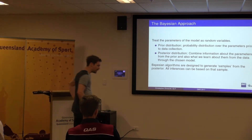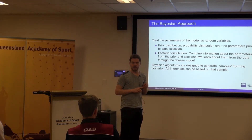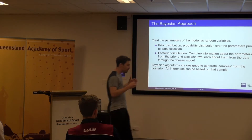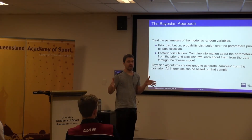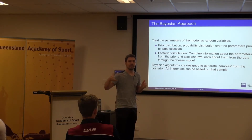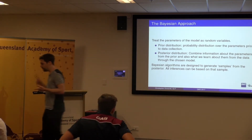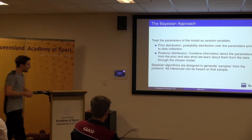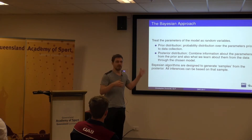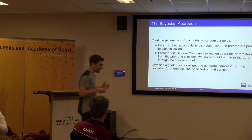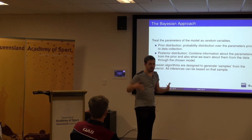In the Bayesian approach we treat our parameters as random variables, and we have two different objects. We've got the prior distribution, which is a probability distribution over your parameter space. The idea of the prior is to incorporate any information you have about those parameters before you collect the data. If you've done similar studies you can incorporate that information into the prior, and if you've got expert opinion we can also incorporate that. Then we combine that prior information with what we learn about the parameters through the data — that comes through the specification of the statistical model. Combining these two pieces of information together gives us something called the posterior distribution, and all of the inferences we make are then based on this posterior distribution.